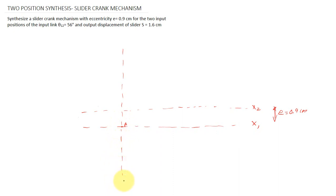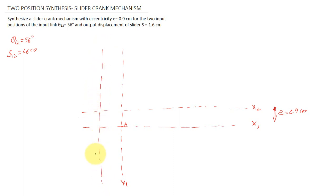Next, mark a vertical line passing through point A — let it be y1. From the question, theta 1-2 is equal to 56 degrees and S12 is equal to 1.6 centimeter. Then mark another vertical line y2, where the distance between y1 and y2 is equal to S12 divided by 2, which is 0.8 centimeter.